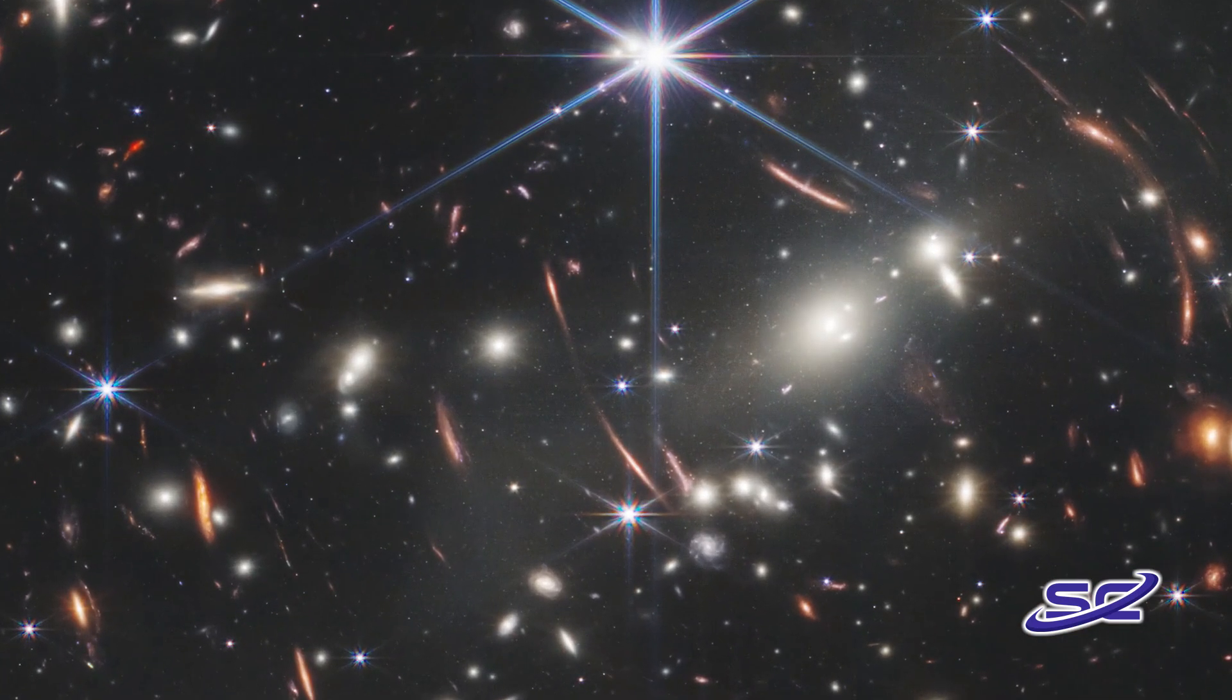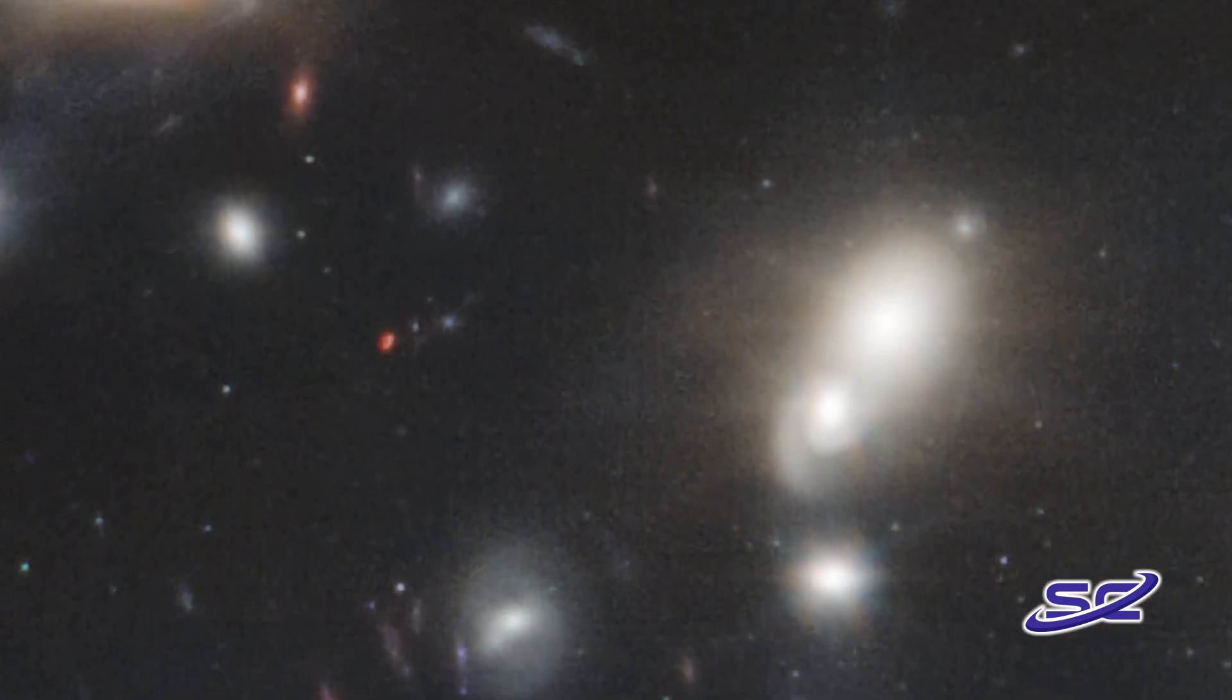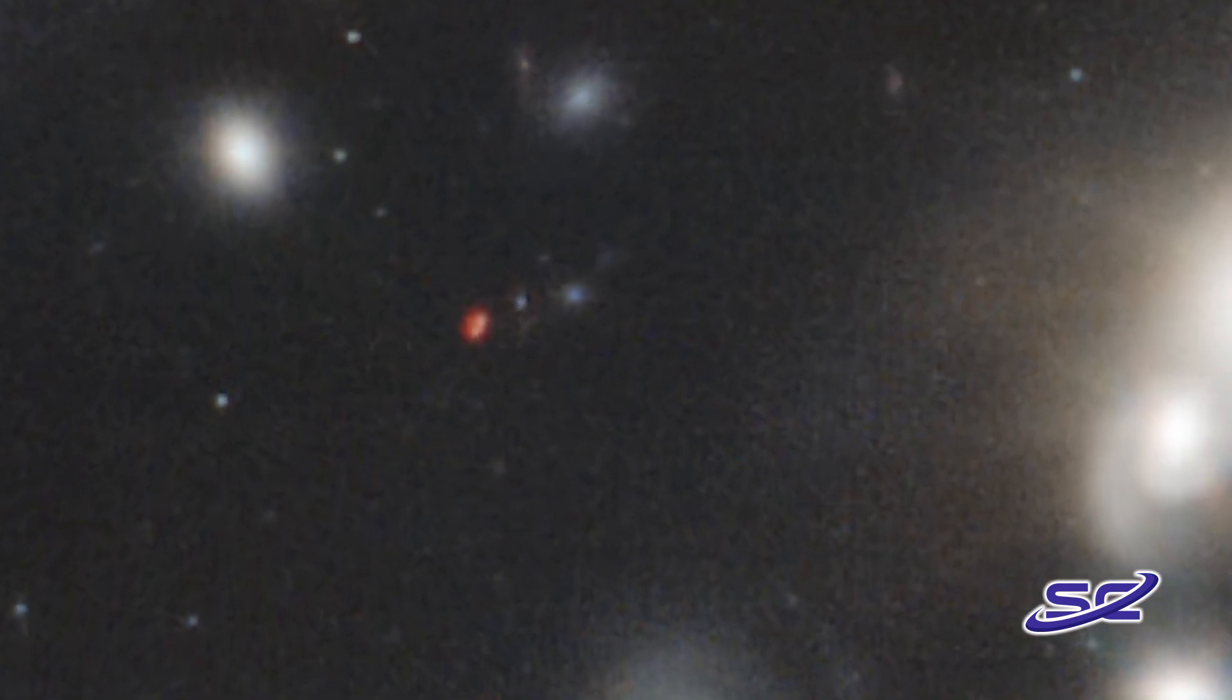To give you an idea of how far away this is, they say this first image slice of the sky is about as large as if you were to hold a grain of sand out at arm's length. That's pretty tiny. And we'll run all of these images again at the end of the video as well.